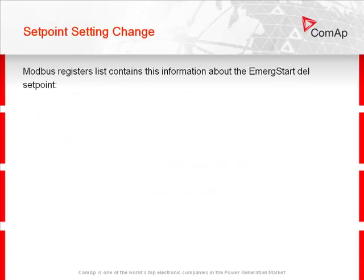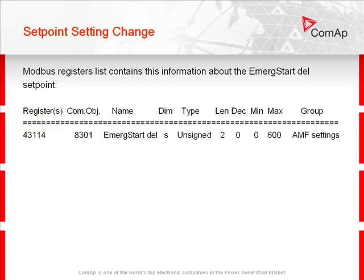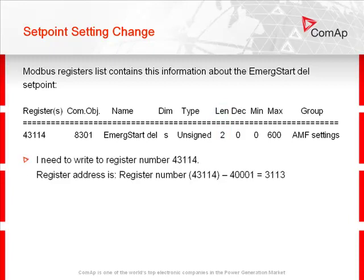The Modbus registers list contains information about the emergency start delay setpoint. The column 'Registers' gives the register address, and 'Length' indicates the data length — 2 means 2 bytes, which is one Modbus register. I need to write to register number 43114, meaning the register address is 3113.